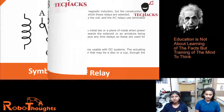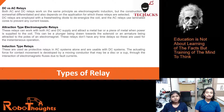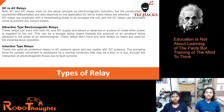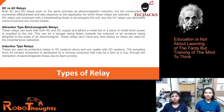The types of relays: DC versus AC relays. Both AC and DC relays work on the same principle of electromagnetic induction, but the construction is somewhat differentiated and also depends on the application. DC relays are employed with a freewheeling diode to de-energize the coil, and AC relays use laminated cores to prevent current losses.